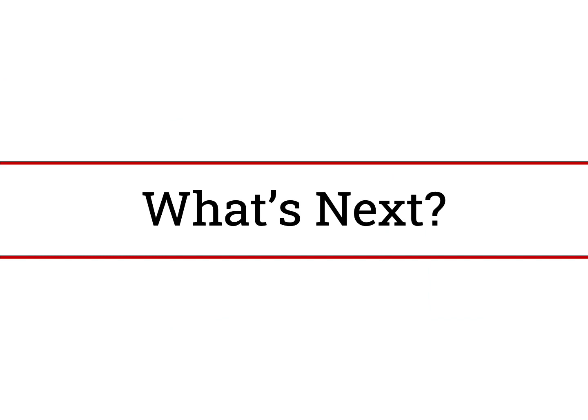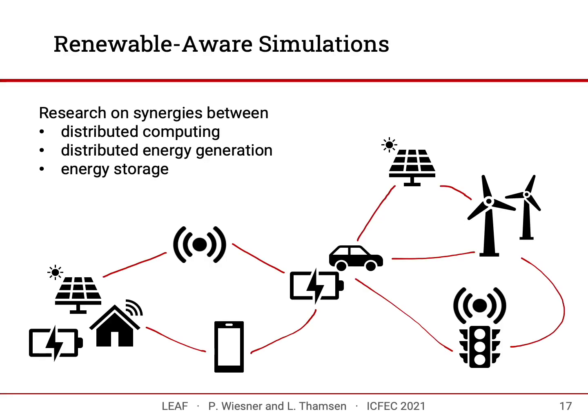In future research, we plan to identify potential synergies between these novel highly distributed computing environments — IoT, fog, and edge computing — and distributed power generation and energy storage. Given that urban environments increasingly have rooftops equipped with solar panels, we want to identify use cases and architectures that make best use of this energy technology. LEAF is an optimal candidate for research in renewable or carbon-aware computing, because its simplicity makes it easy to combine with simulators from other domains in co-simulation frameworks.